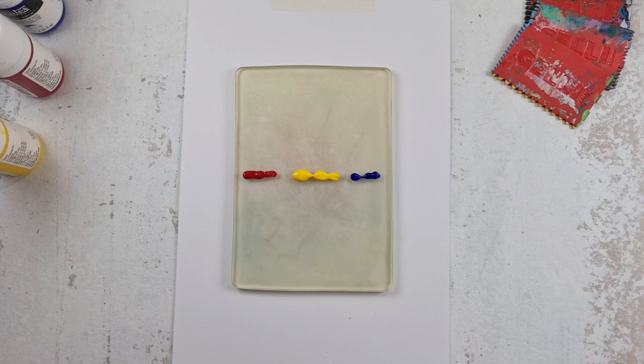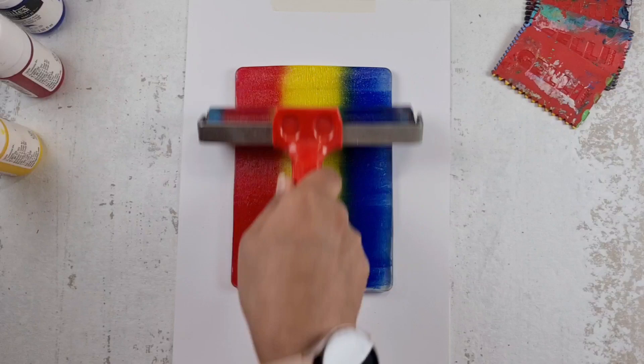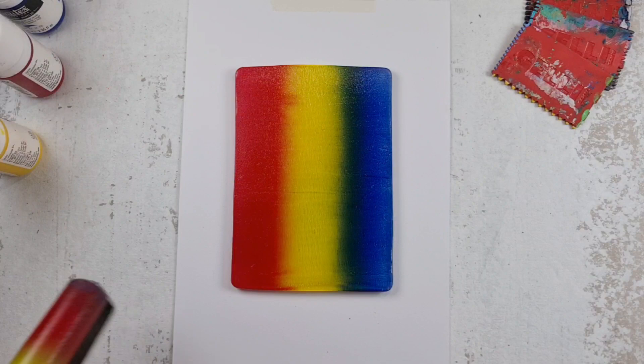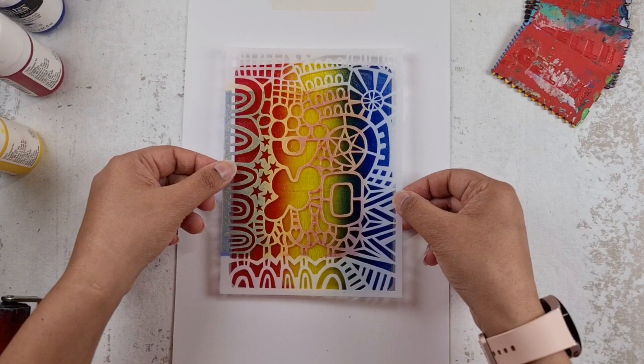But first of all, I'll show you how I actually made the backgrounds. So as you saw, I've got some acrylic paint here. These are by Liquitex. I absolutely love using them for gel printing. And I've put them down and I'm using a wide roller to blend the three colors together. So where the colors blend together, they make a secondary color.